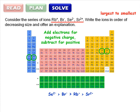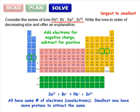Don't forget, we also need a brief explanation. Let's write: all have the same number of electrons. In other words, they're isoelectronic. The smallest ions have more protons to attract the same number of electrons.